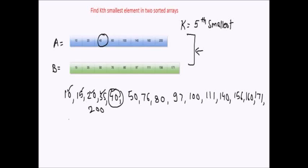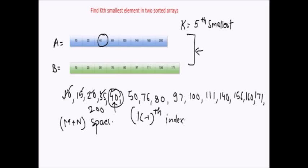However, this approach requires extra O(m + n) space, because when we merge the arrays we need temporary storage to hold all the elements. Then we access index k minus 1 in the resultant array to get the kth smallest element. The question is: can we do better without using this extra space? Can we make a calculated guess to discard some portion of the array, knowing the kth smallest element cannot lie beyond or before a certain point?